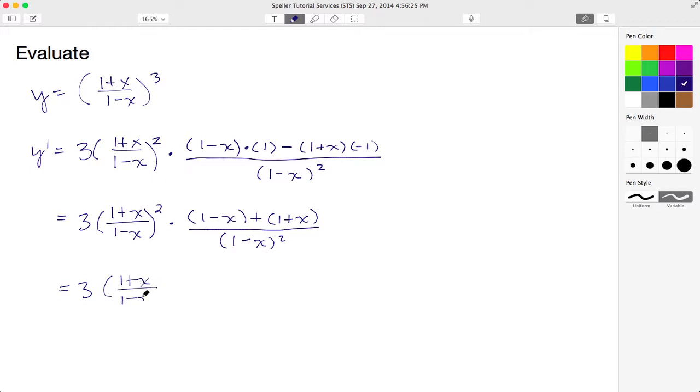1 plus x over 1 minus x, that quantity is squared, times, well here I've got 1 and a 1 to give me a 2, and then a negative x plus a positive x, those go away, and I'm left with this denominator again which is 1 minus x quantity squared.